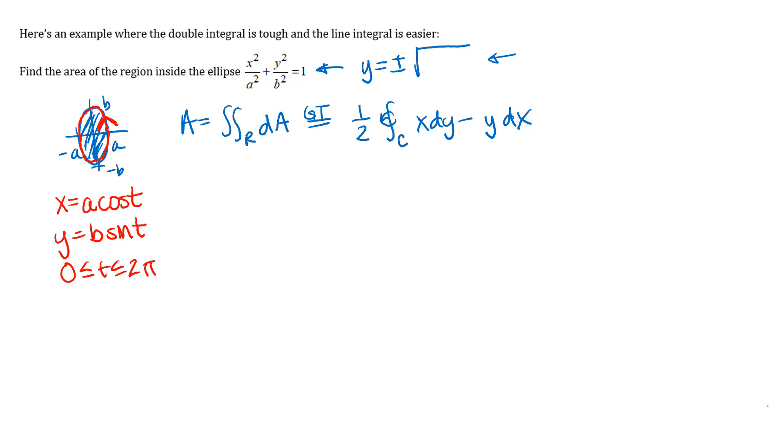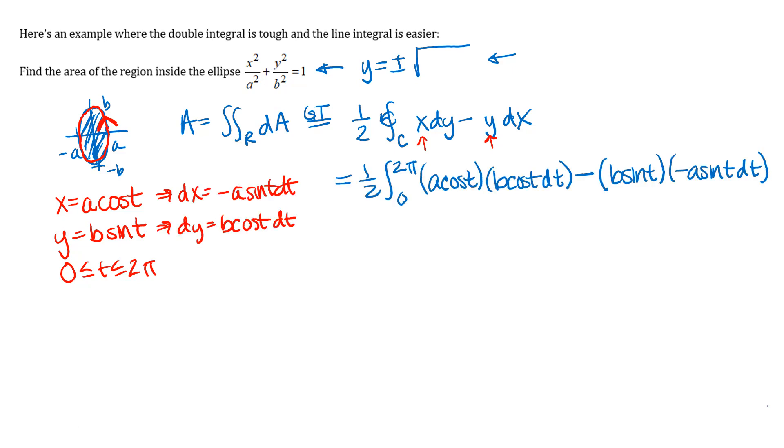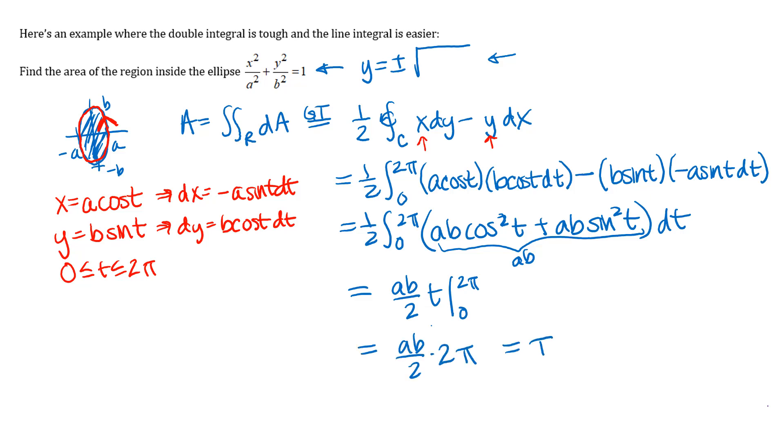I'll substitute in my x for x, my y for y, and my dy and my dx will come from differentials associated with my parameterization for my curve. So let's go ahead and set up that line integral. And I get a lot of nice simplification in that integral. And so when I integrate that with respect to t, I'll have ab over 2 times t from 0 to 2 pi. And then I'll plug in my limits of integration. We get pi ab.